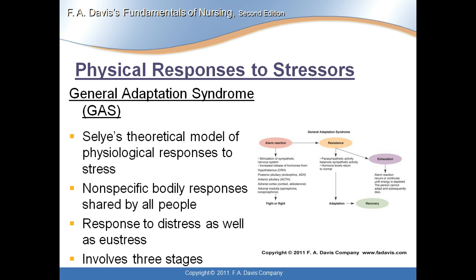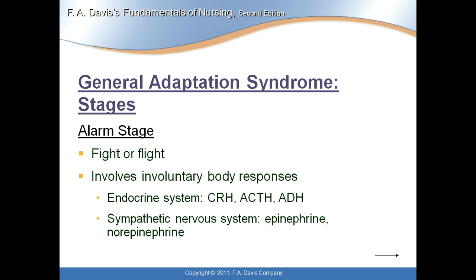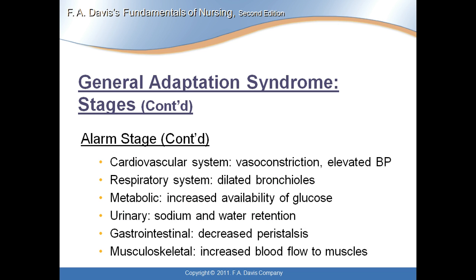The General Adaptation Syndrome is a theoretical model of psychological responses to stress. It involves nonspecific body responses shared by all people, applies to both distress and eustress, and involves three stages. The first is the alarm stage, or fight or flight. This involves involuntary body responses across the endocrine system, sympathetic nervous system, cardiovascular system, respiratory system, metabolic, urinary, gastrointestinal, and musculoskeletal systems — it encompasses all body systems.